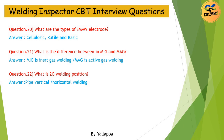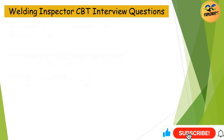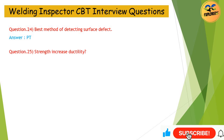Question 22: What is the 2G welding position? Answer: Pipe vertical, horizontal welding. Question 23: Shielding helps to prevent oxidation — True. Question 24: Best method of detecting a surface defect? Answer: PT. Question 25: When strength increases, ductility? Answer: Decreases.